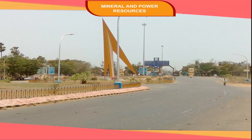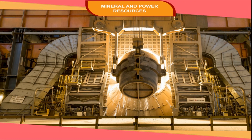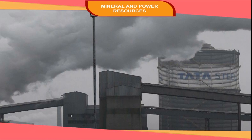In India, the first iron and steel plant was set up at Chennai in 1808 by the East India Company. In 1871, the Barakar Iron Works were set up at Kulti in West Bengal, which was taken over by the Bengal Iron Company. In 1907, Jamshedji Tata set up a modern steel plant at Jamshedpur in Jharkhand.